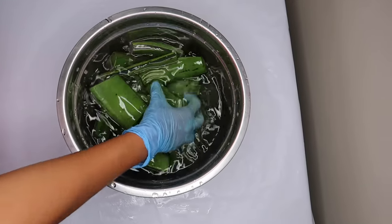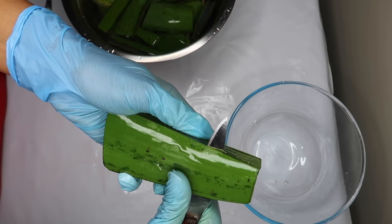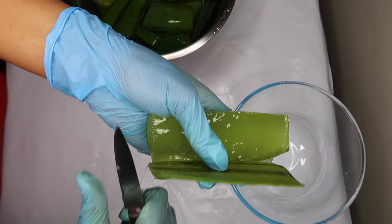Therefore I advise you to do a patch test on the crook of your elbow 48 hours before use. Then I remove the skin on one side of each leaf and expose the gel.